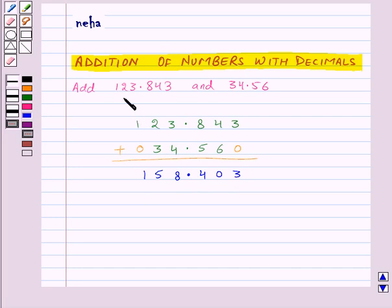So, the addition of these two numbers is 158.403.